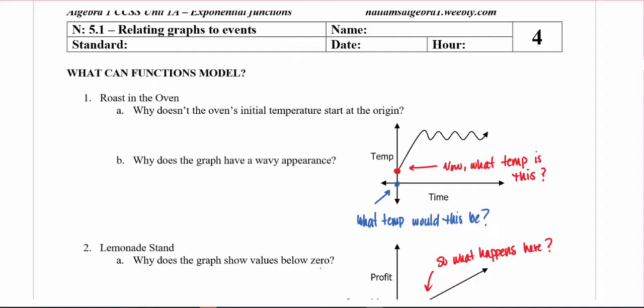Okay, hi and welcome to Notes 5.1, which we're going to try to relate graphs to events. So we're going to take things that happen, these will be pretend ones, but basically anything in the real world, and we're going to try to relate them to a graph that we may see so we can understand the graph, understand what parts are going on, and have it describe the situation.